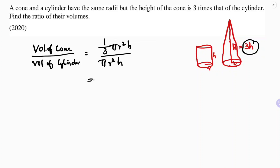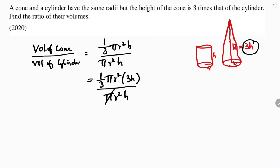Substituting: 1/3 π r² multiplied by 3h (height of the cone, which is three times the height of the cylinder), divided by π r² h. Here π and π cancel, r² and r² cancel, h and h cancel, and 3 and 3 also cancel. So the ratio is 1 : 1.